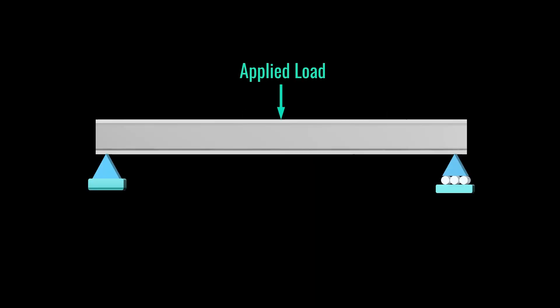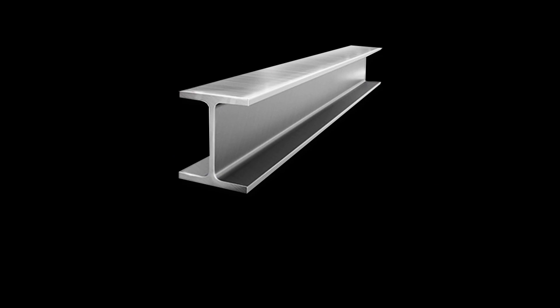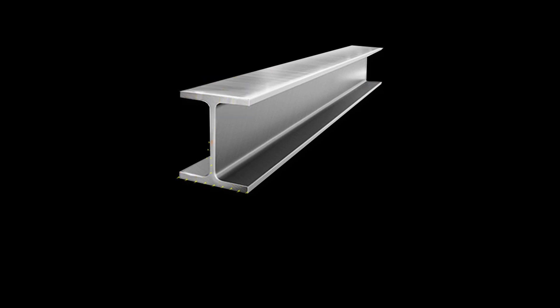When a load is applied, the beam tends to deform and internal forces develop to maintain equilibrium. If the beam is strong enough, it will resist the applied loading. These internal forces have two components: shear force, oriented parallel to the cross-section, which tries to make one part slide relative to another; and normal or axial forces that act perpendicular to the cross-section, always oriented along the axis of the beam.